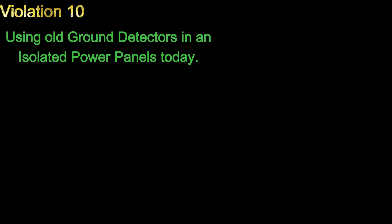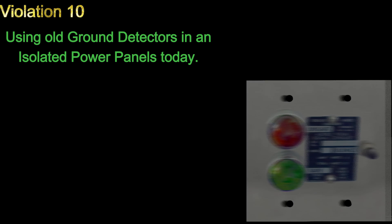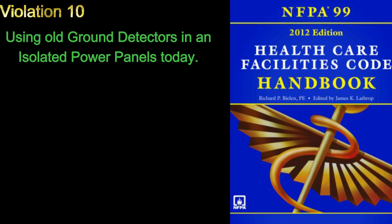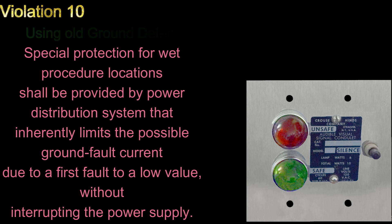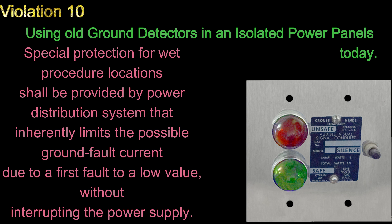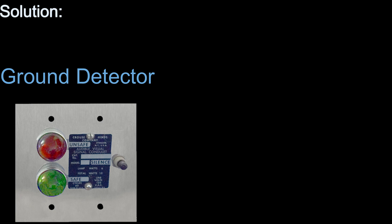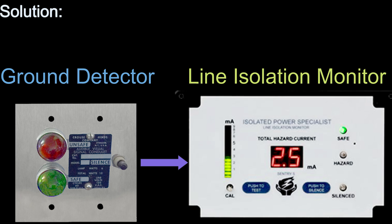Number 10: Using old ground detectors in isolated power panels today. Code 6.3.2.2.8.2.1 — special protection for wet procedure locations shall be provided by a power distribution system that inherently limits the possible ground fault current due to a first fault to a low value, without interrupting the power supply. Solution: Change all ground detectors over to line isolation monitors to meet the present code. The LIM has a digital meter displaying the hazard current. The old ground detectors had to trip at 2 milliamps, and today a LIM has a threshold trip of 5 milliamps but not at 3.7 milliamps, which cuts down nuisance alarms.